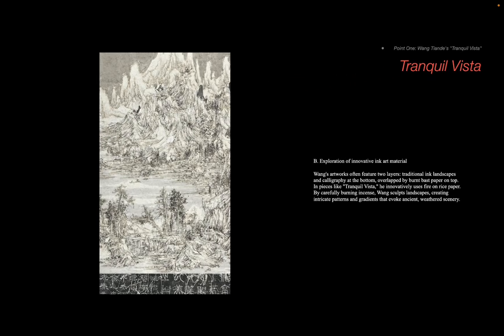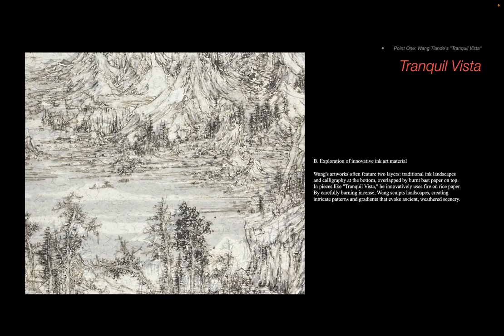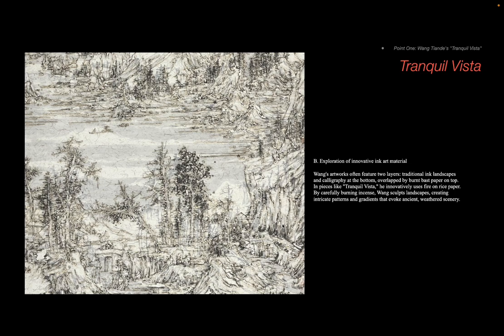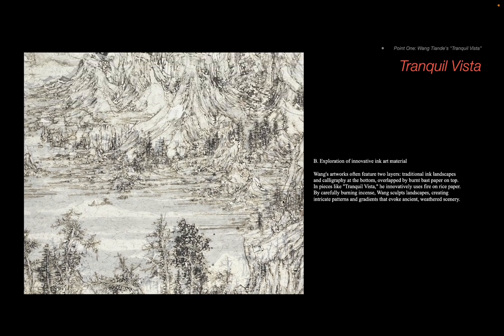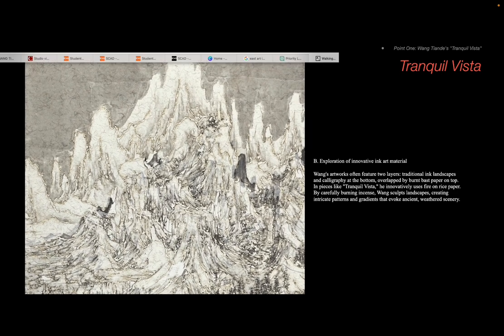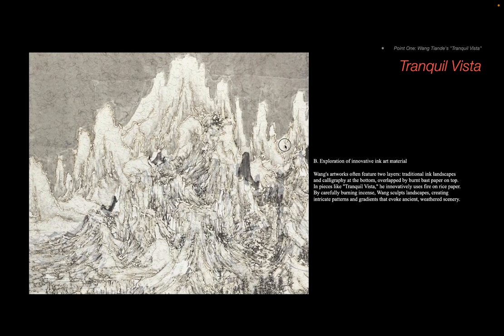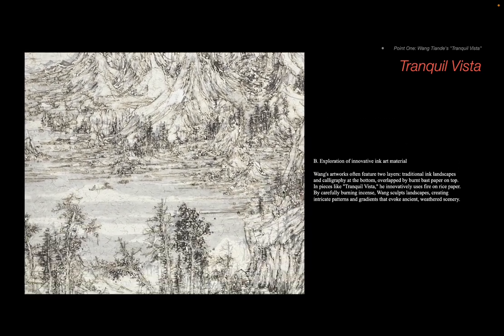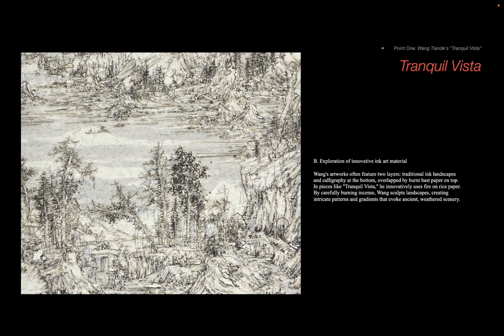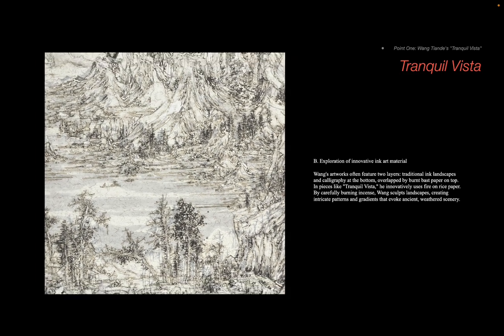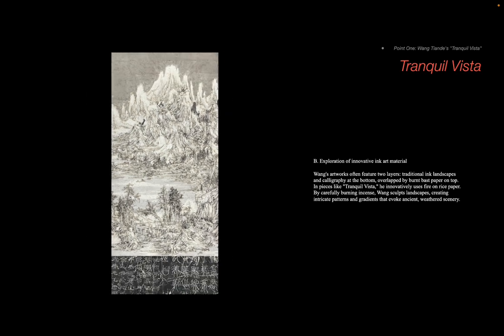For his work, he always uses two layers in his artwork. The first layer is traditional ink art of the landscape and writing. Then he puts a layer of burnt paper on top. In pieces like the Tranquil Vista, he uses incense sticks to burn the paper. This creates beautiful patterns that look old, depicting scenery in a new way.